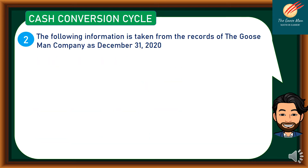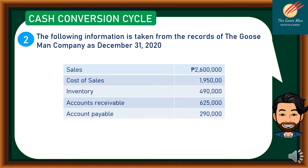Let's have example number two. The following information is taken from the records of the Diviseman company as of December 31, 2020: sales of 2,600,000; cost of sales of 1,950,000; inventory of 490,000; accounts receivable of 625,000; and accounts payable of 290,000. We would like to know the cash conversion cycle of the company.